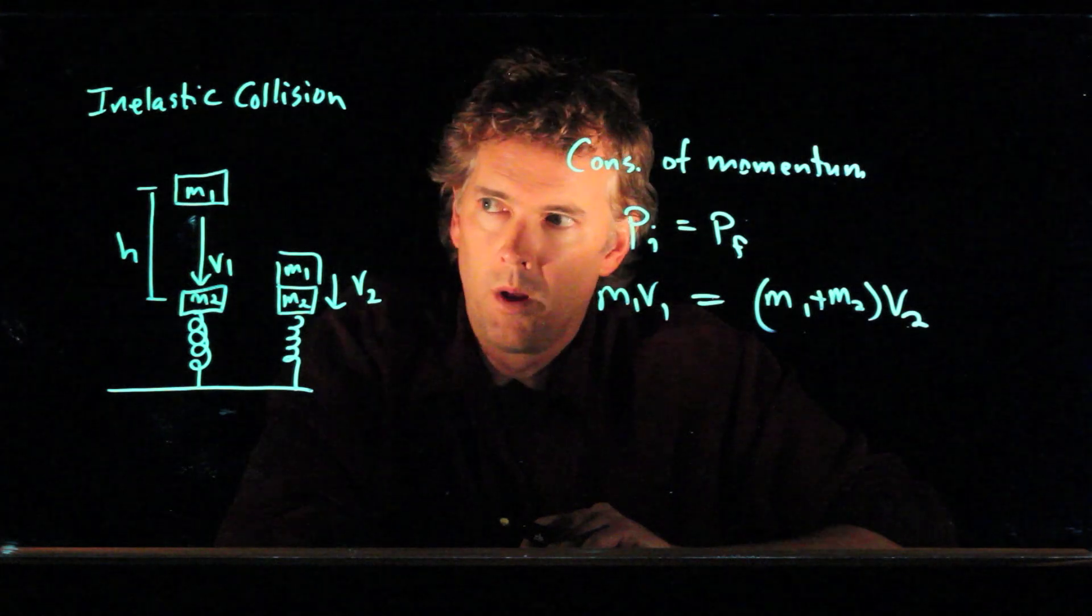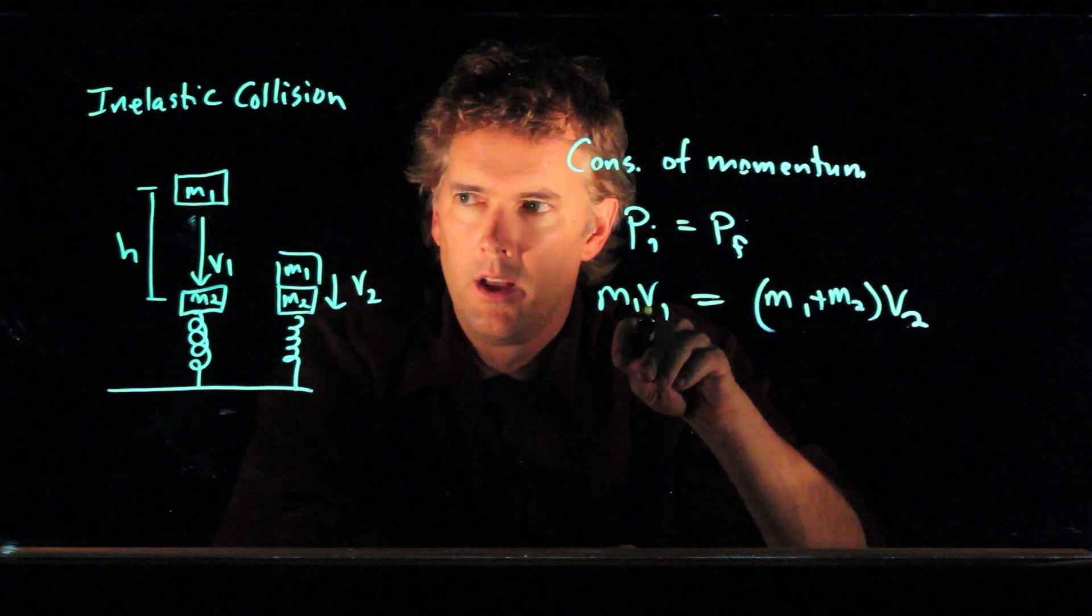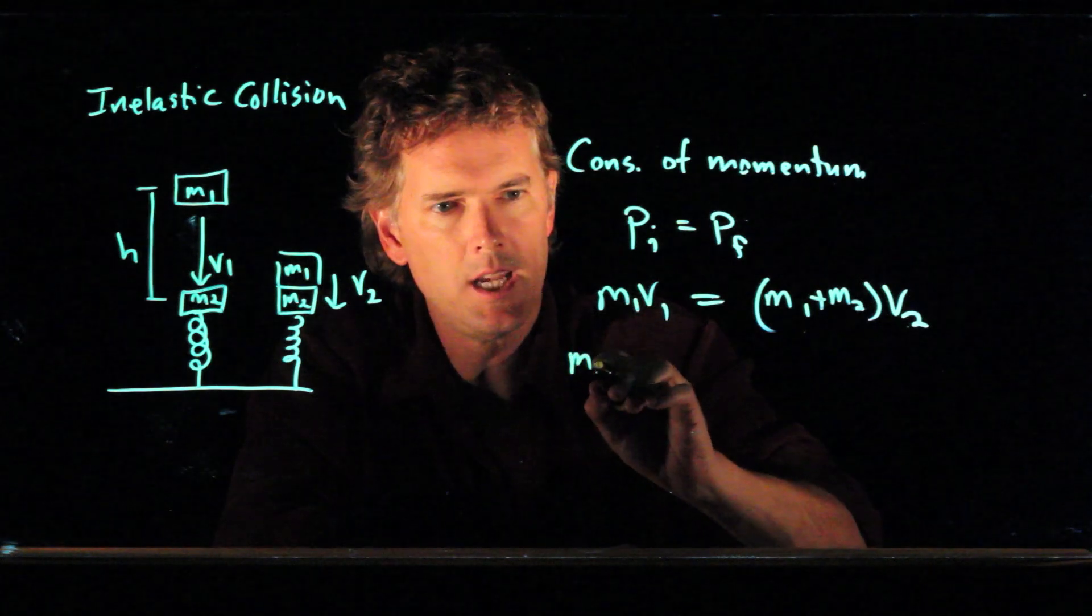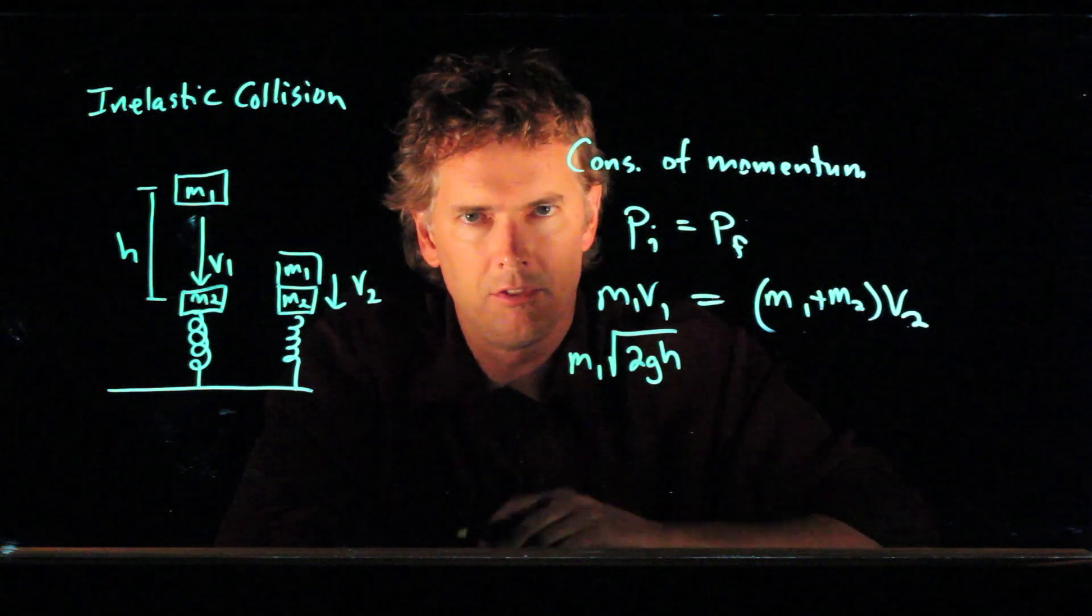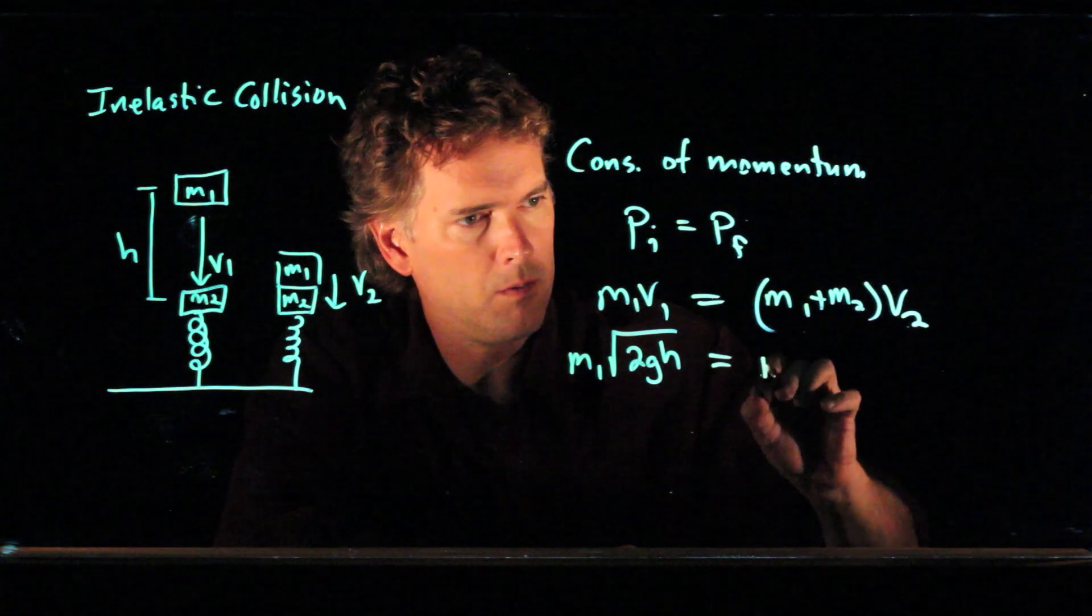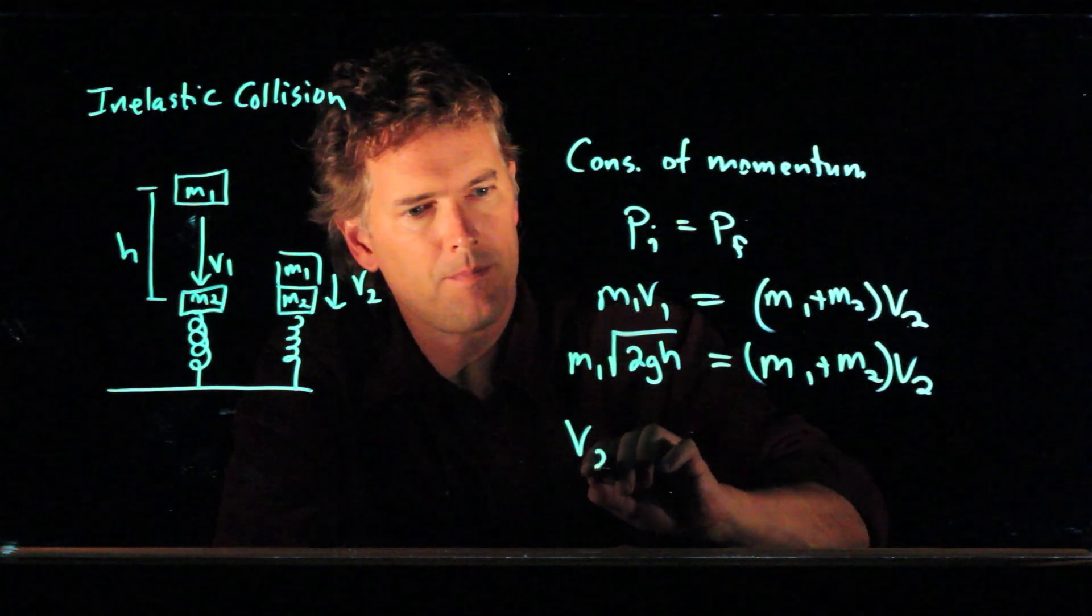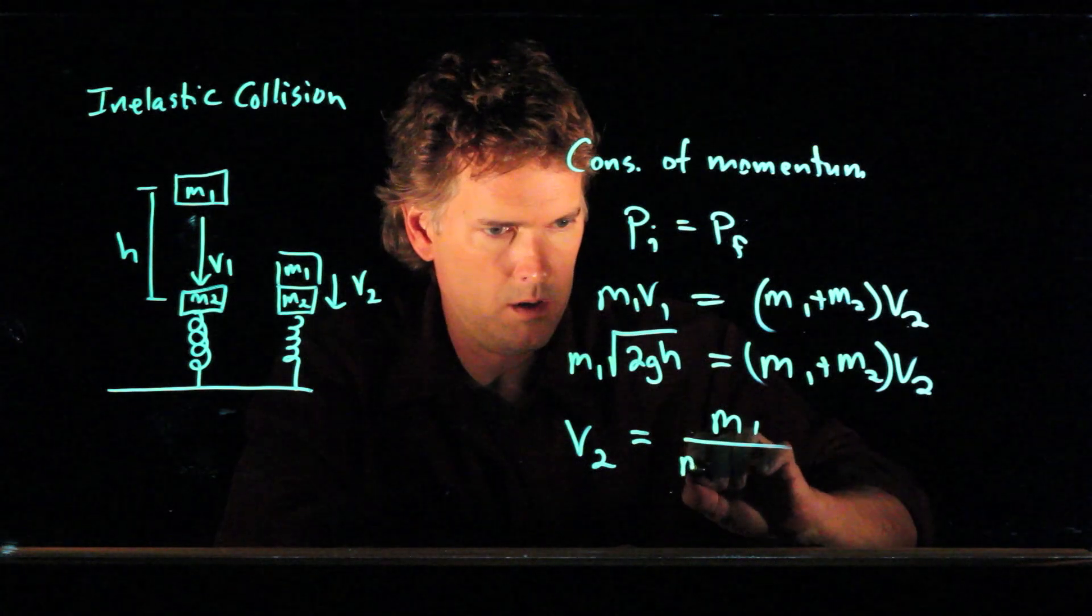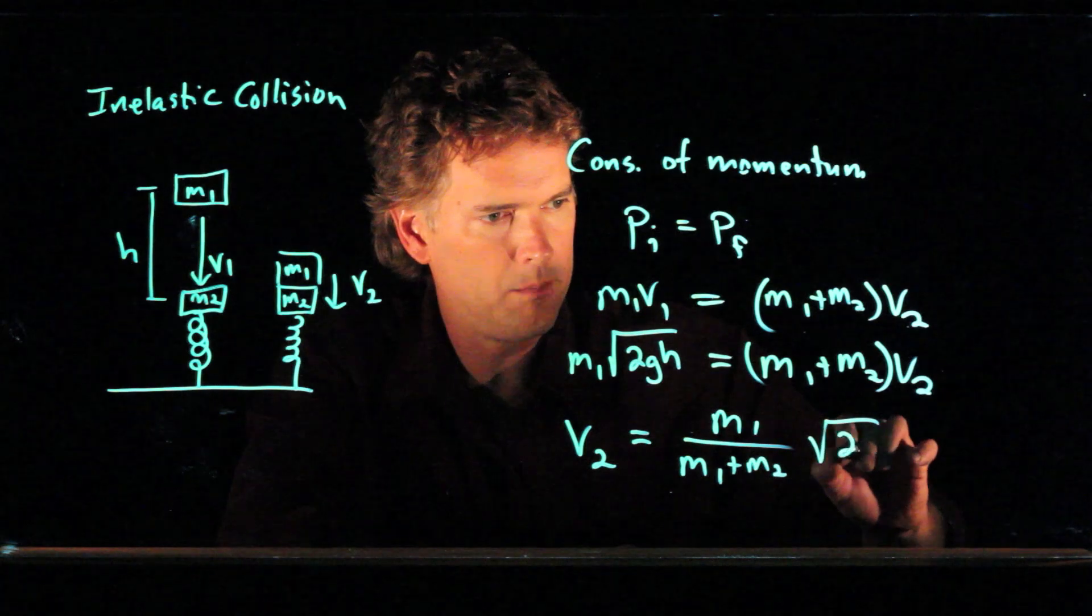Let's go one more step. We know from free fall that the speed V1 is just going to be the square root of 2GH. If you drop an object from a height H, that's the speed when it's at the bottom of that distance. We can rewrite this and now solve for V2. We get V2 is equal to M1 over M1 plus M2, all that times the square root of 2GH.